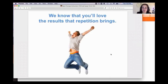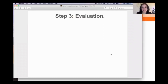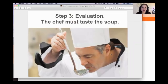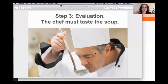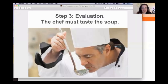Now let's move on to step three: the evaluation. I call this step 'the chef must taste the soup.' When we're interpreting, there's so much going on in our brains simultaneously that it's absolutely impossible to evaluate your performance as you're interpreting. Your brain is just trying to keep up with decoding information, finding target language equivalents, sounding natural, and making grammatical and syntactical adaptations.